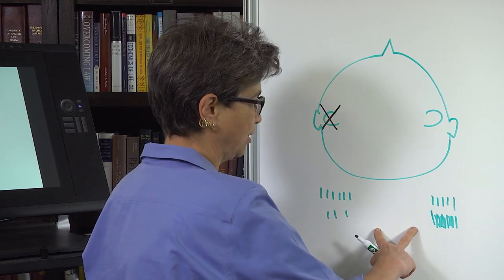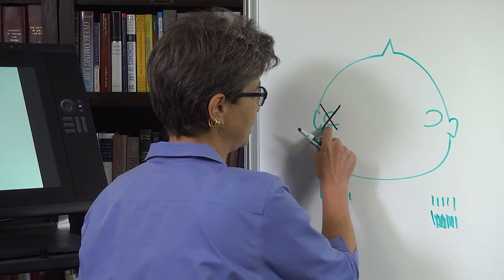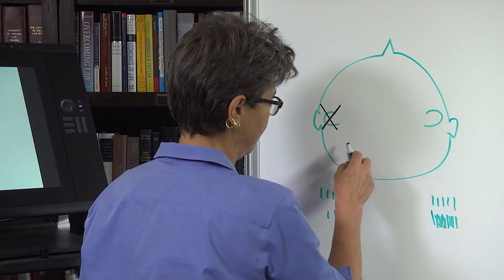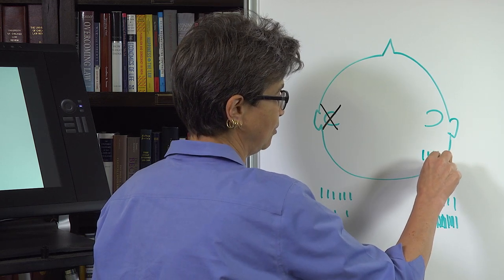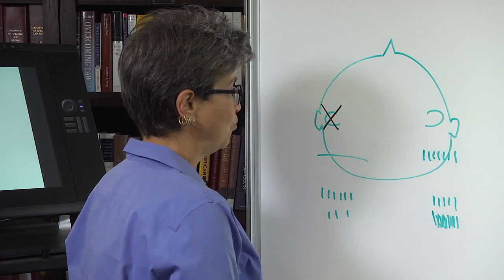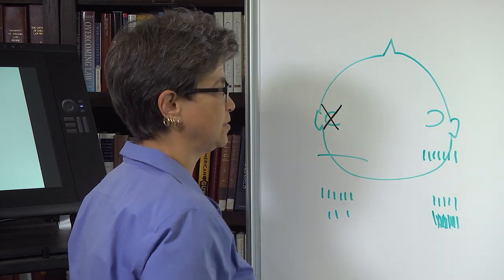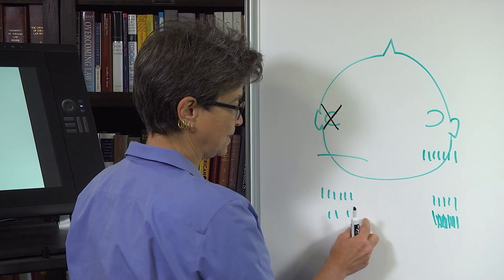But really what the nervous system is doing is it's not measuring how often this fires. It's just comparing these two. And so when we have this, what we get from losing the labyrinth on one side is we get activity on the intact side and nothing, zip on the damaged side, on the affected side. And what does the nervous system read that as? The nervous system reads it as not different from this, which would mean that you're rotating the head to the right.